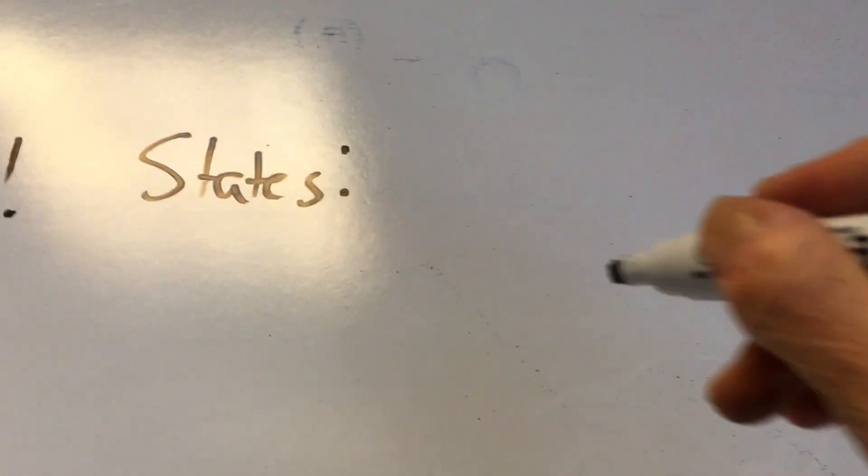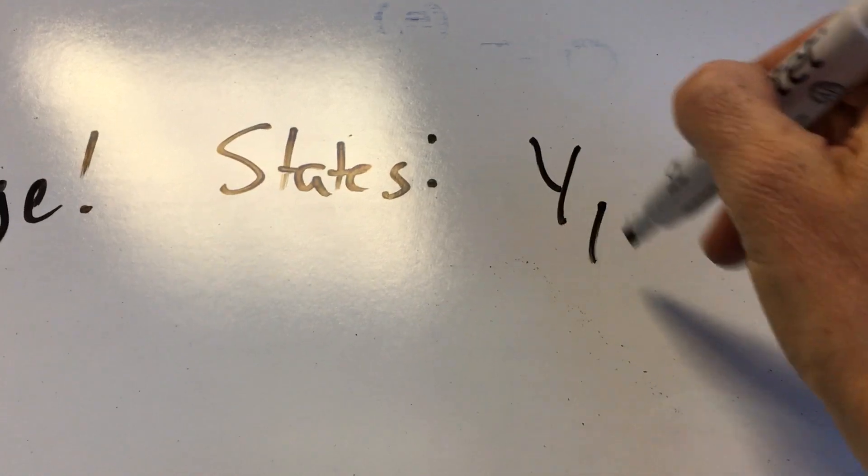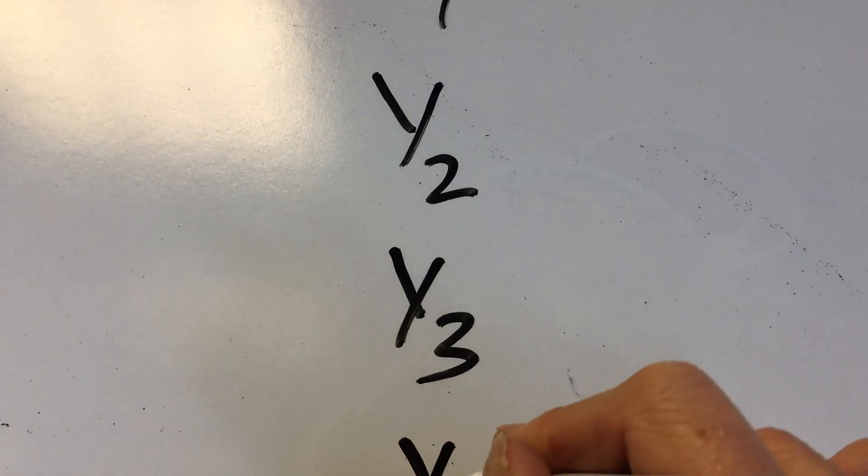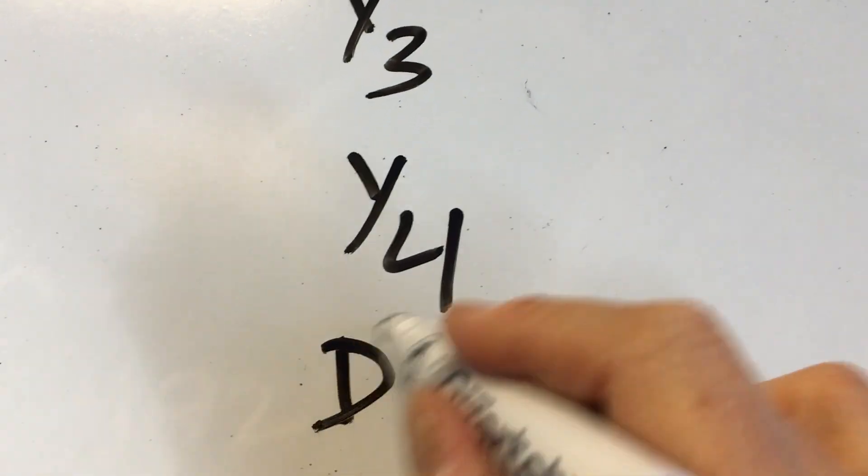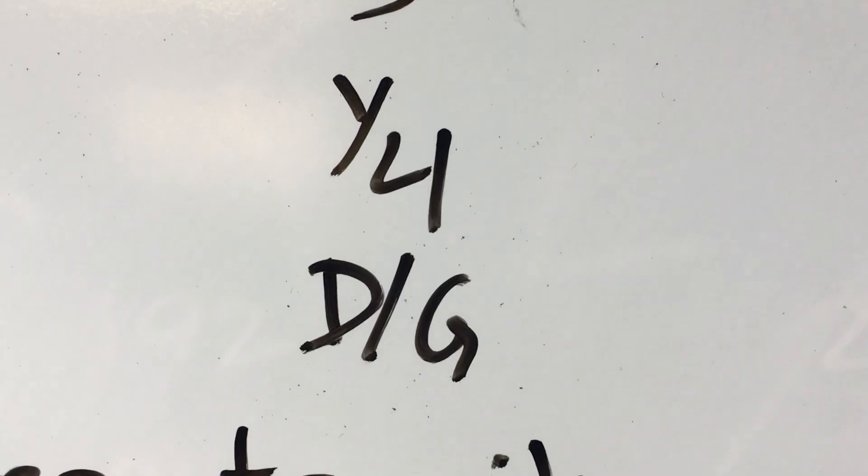We're going to start with Y1, that they are in the first year, second year, third year, fourth year, and then we're going to assign a state, we're going to call it D or G, which is where they drop out or graduate.